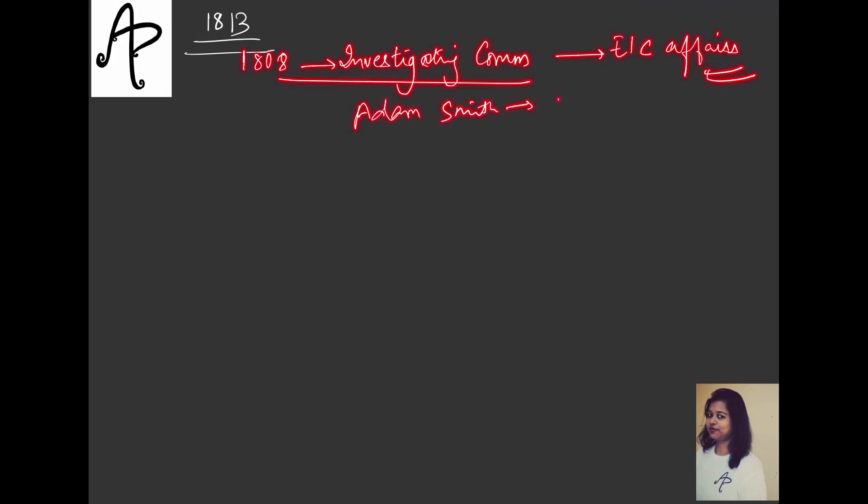So from here what happened was that one more path opened up for easy trading. And one more thing was done - revenue administration and judiciary functions will be separated. This act doesn't have much that's especially important. This was just a quick overview. Now what comes next is 1813, which is very very important. But to understand this, we definitely need to understand its background.